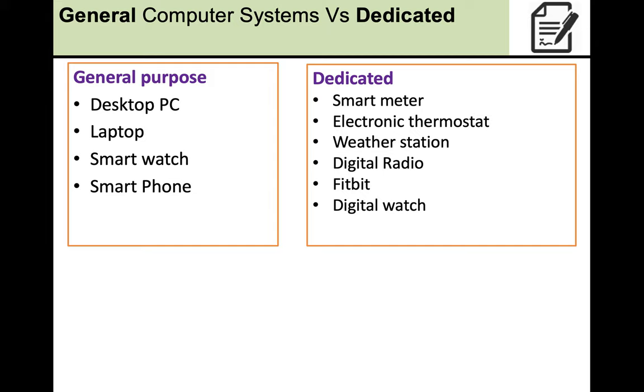So these are getting a little bit trickier to distinguish between, especially now as we start to have the internet of things and technologies getting smarter and more sophisticated. So on the left, we've got general purpose like a desktop PC, a laptop, a smartwatch and a smartphone, because all those computer systems are quite advanced and can do more than one thing. You can send an email from your phone, you can make phone calls, you can send text messages, you can take photos, and some of those things you can even do on a watch.